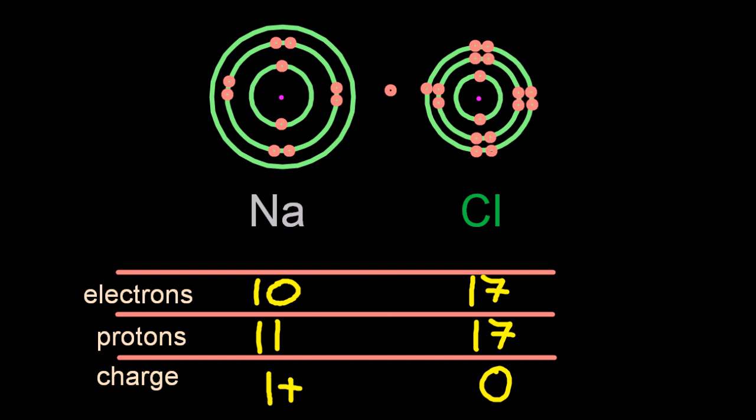Putting the electron onto the chlorine atom gives me 18 electrons now, and by the same logic, the charge is going to be 1-. Electrons are negative, so adding a negative makes it negative. I need to put those signs in now, because they're no longer atoms, they're ions.